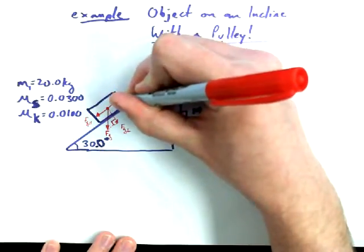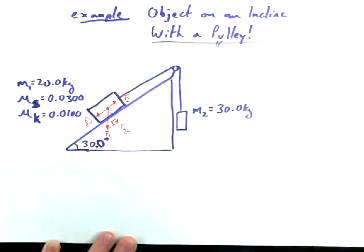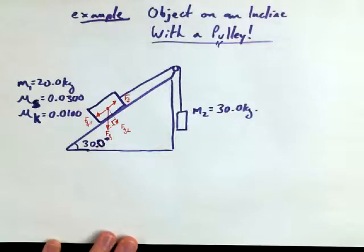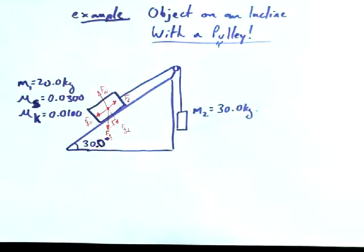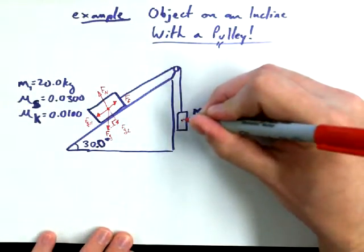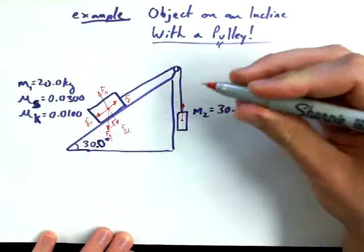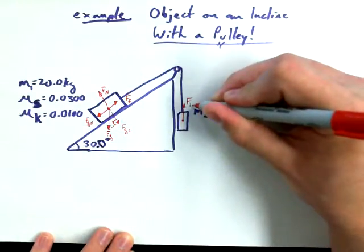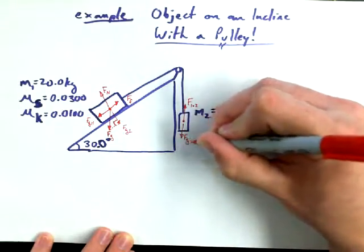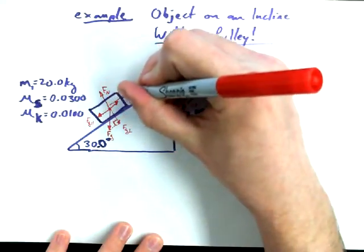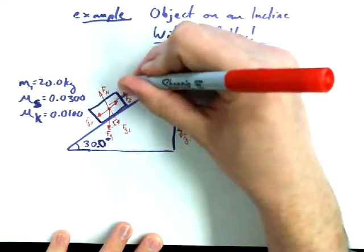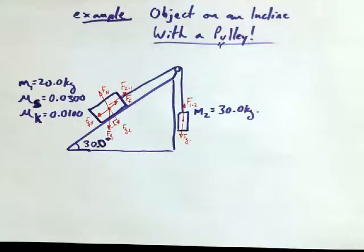We've also got a force due to, I'm just going to call it F subscript little f right now, because I haven't decided yet if this is going to be static friction or kinetic friction. And I'm going to have a normal force. Now we've only addressed one object. We've got to deal with the other object. This guy is going to have a force of 1 acting on 2, and this guy is going to have a force of gravity. So there's also a force of 2 on 1.